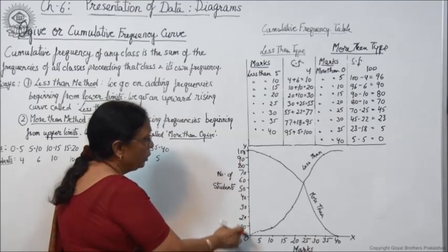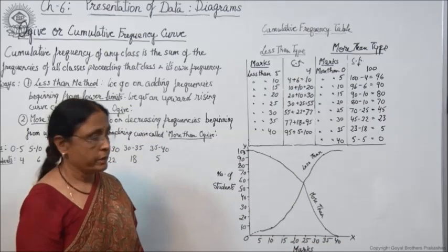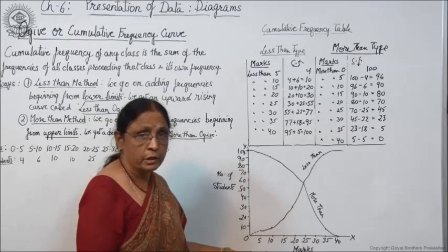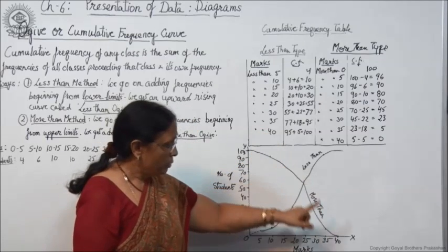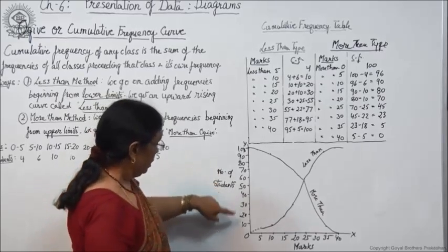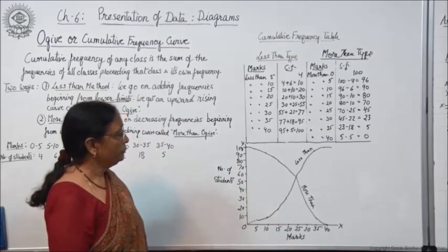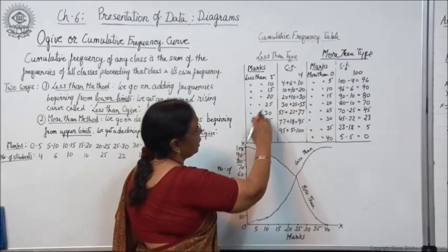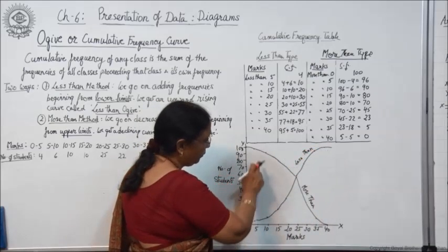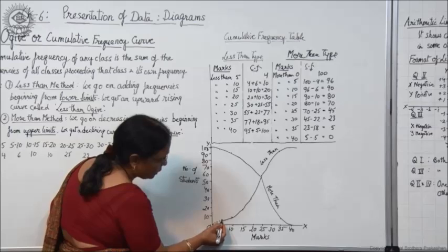After making the cumulative frequencies of less than and more than type, you have to plot the graph. On the y-axis we take number of students, on the x-axis we take the class interval of marks — dividing at 5, 10, 15, 20 equal divisions up to 40, which is the upper limit. On the vertical axis, since frequencies are taken in percentage, we divide it into 10, 20, 30, 40 up to 100. Now on the basis of this data, we will plot the points. First we will plot points for the less than curve. Less than 5, they are 4, so we take the point at 5 and 4 — this is the first point.